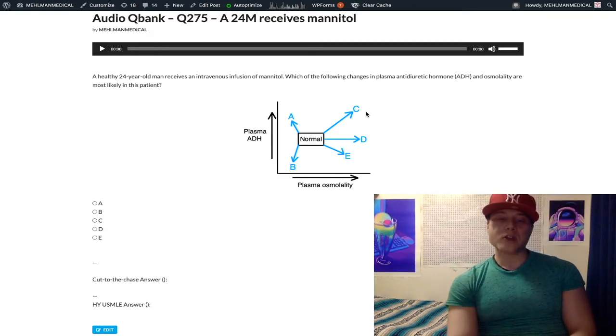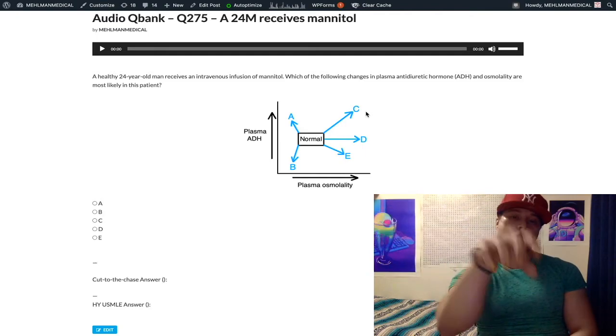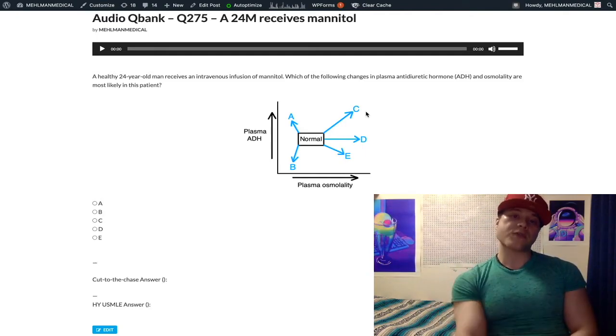Now, some high yield factoids external to this question: mannitol is an osmotic diuretic. The same way it can draw free water into the vasculature, it's going to do that within the proximal straight tubule, thin descending loop of Henle. If you ever get a question where they have a drawing of a nephron with letters at different locations asking where does mannitol act, you're going to choose the thin descending loop of Henle.